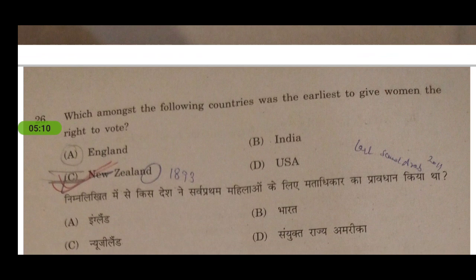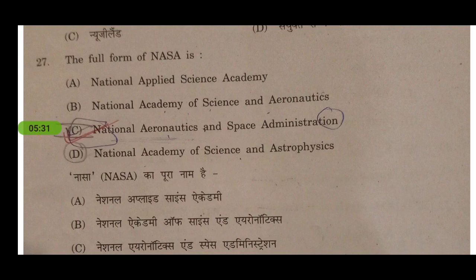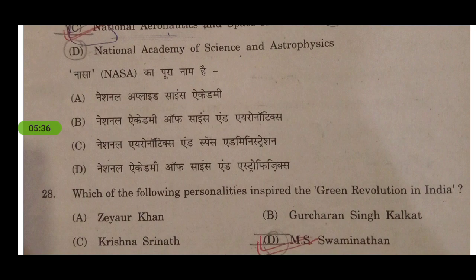Who is the author of the award-winning book Life of Pi? It was written by Yann Martel. Which country was the earliest to give women the right to vote? It was New Zealand in 1893. The last country was Saudi Arabia, which granted women's voting rights in 2016. The full form of NASA is National Aeronautics and Space Administration.